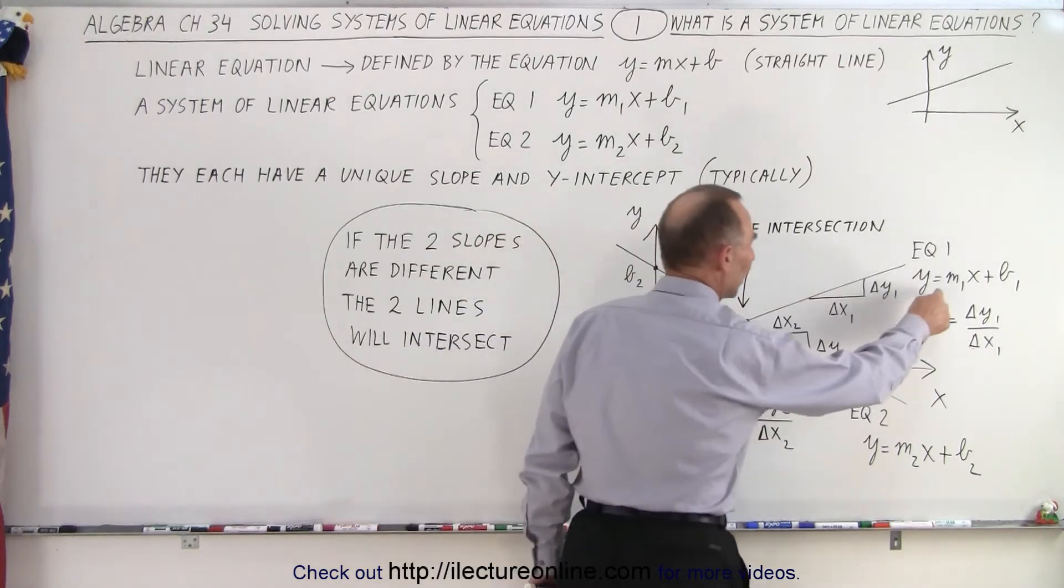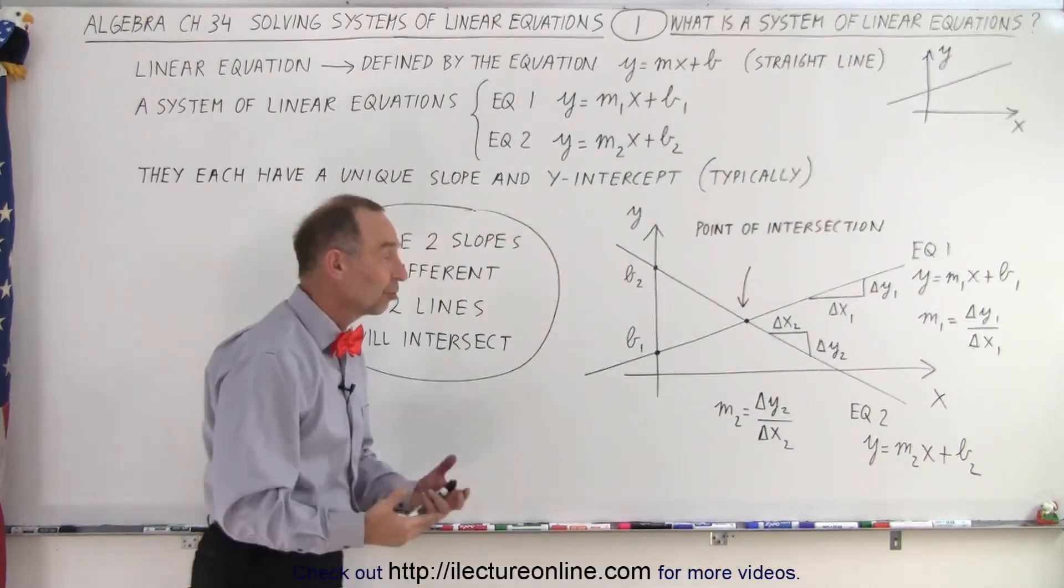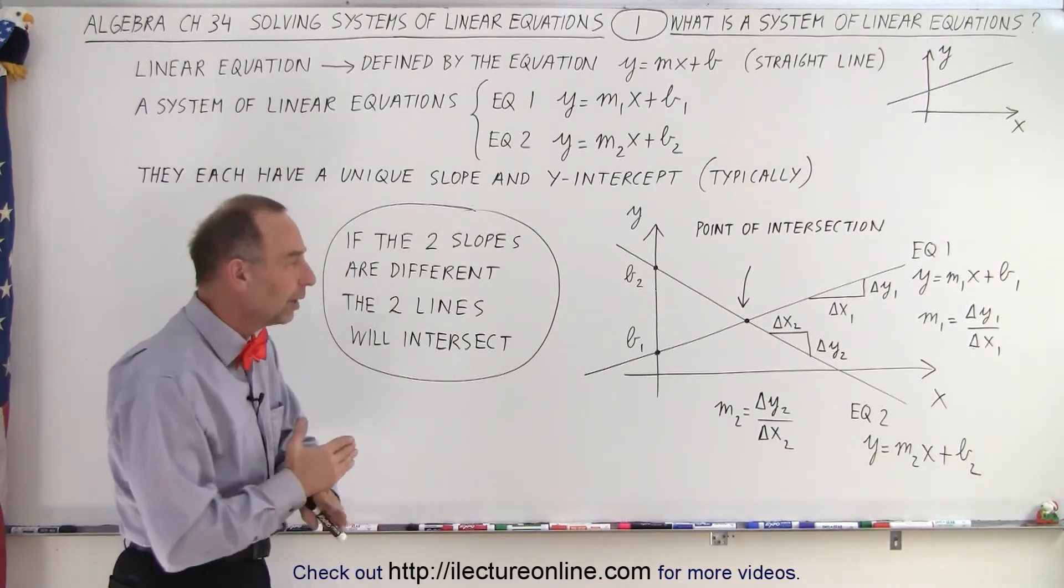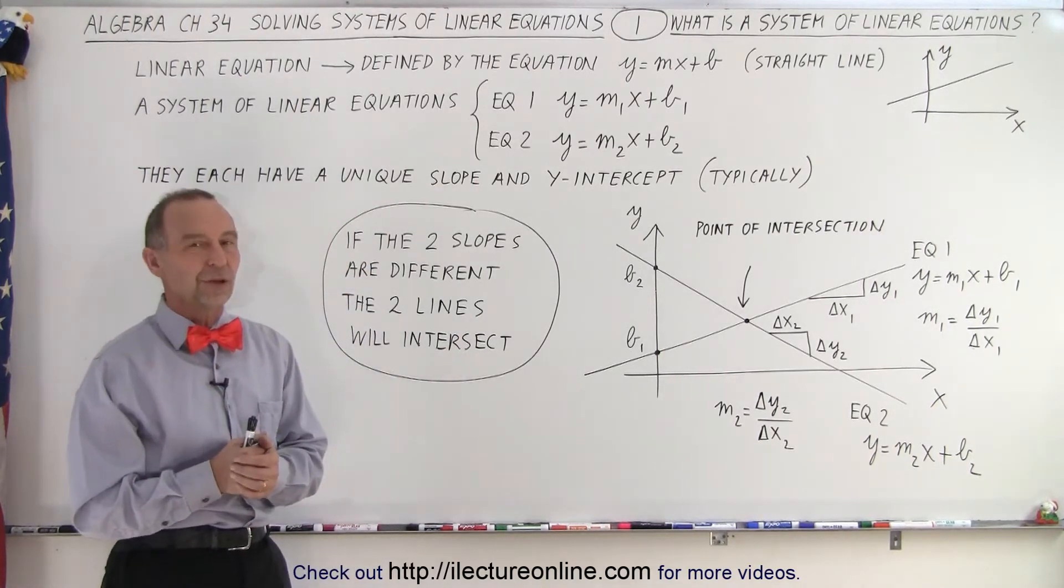So then you can see that your two equations for line one and line two have different intercepts, different slopes, and when we draw them on an xy-plane, they will cross somewhere on the plane, and that is how we define a system of linear equations.